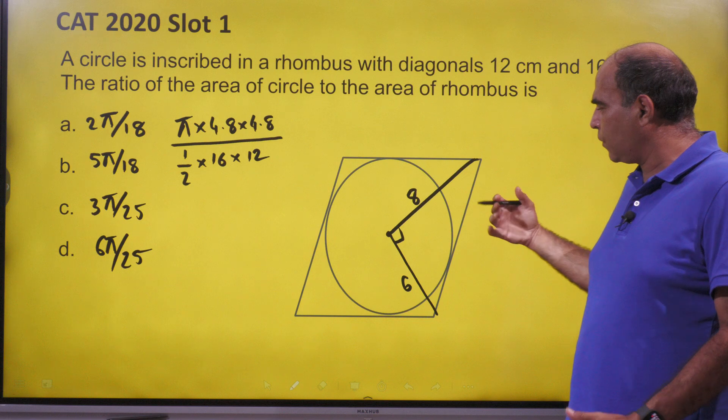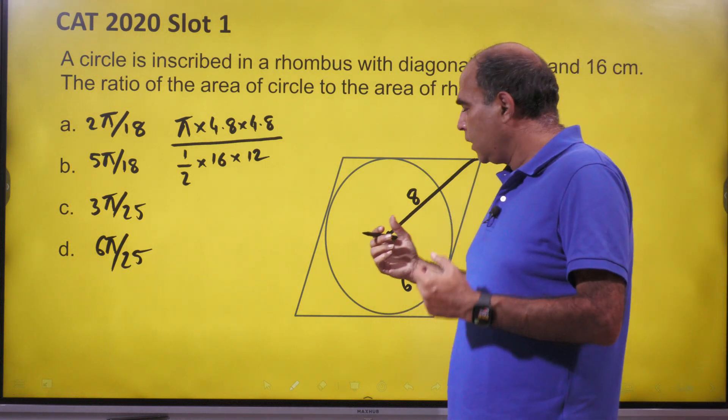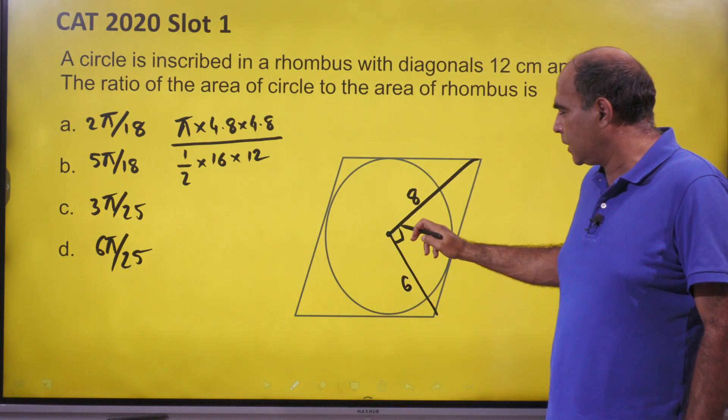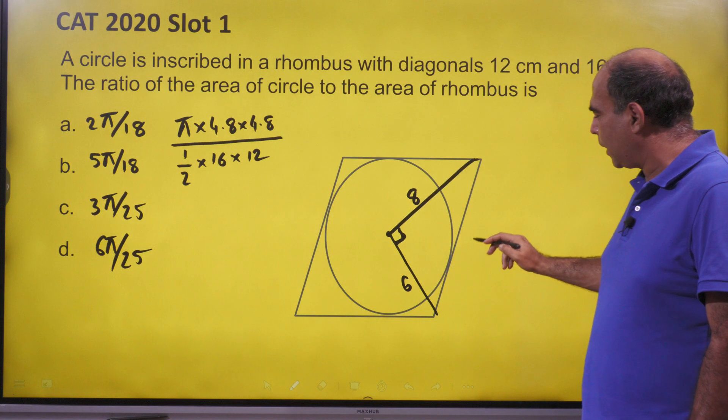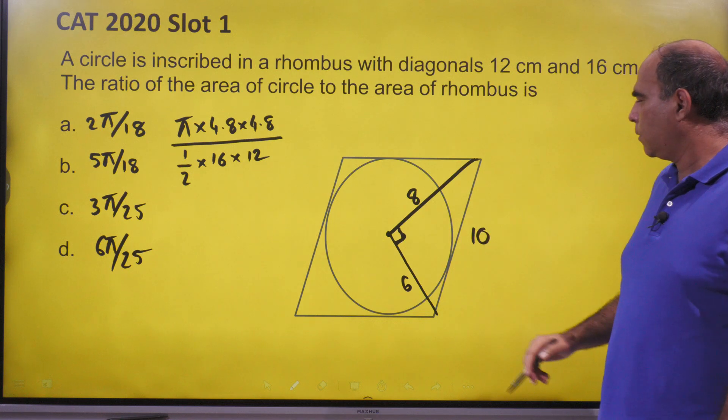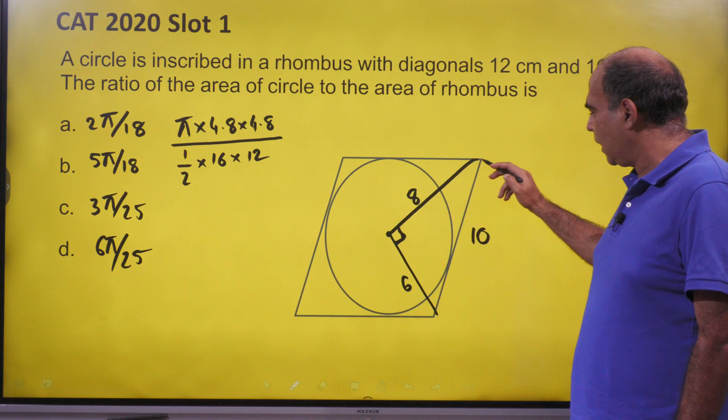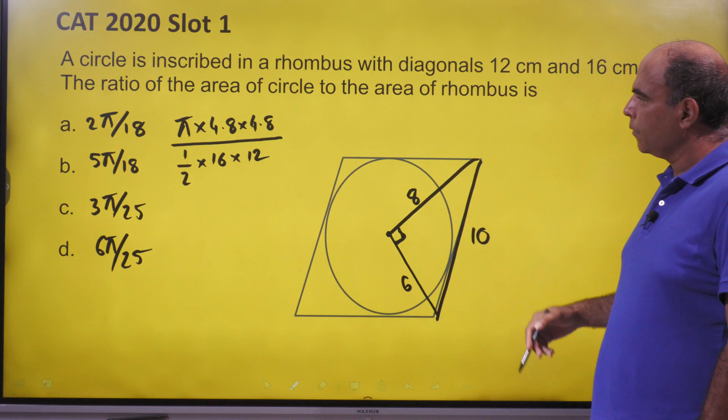This is the figure. As we know, the diagonals of a rhombus intersect at right angles. If this is 8 and this is 6, using the Pythagorean theorem we get a Pythagorean triplet - this is automatically 10, which is the side of the rhombus.